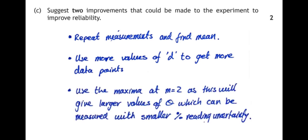And they could use, rather than measuring the angle to the maxima, the first order maxima, they could try and measure the angle to the second order maxima or the third or the fourth and so on. That will give us a larger angle to measure. And therefore, the reading uncertainty on a larger angle will be a smaller percentage uncertainty, and that will improve the reliability of the experiment as well.